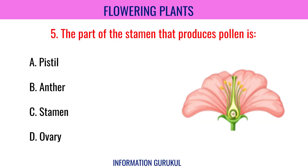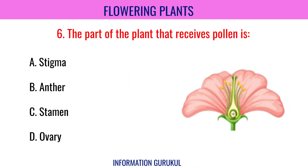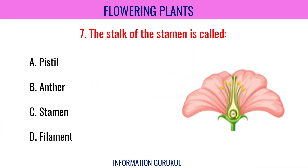The part of the stamen that produces pollen is Anther. The part of the plant that receives pollen is Stigma. The stalk of the stamen is called Filament.